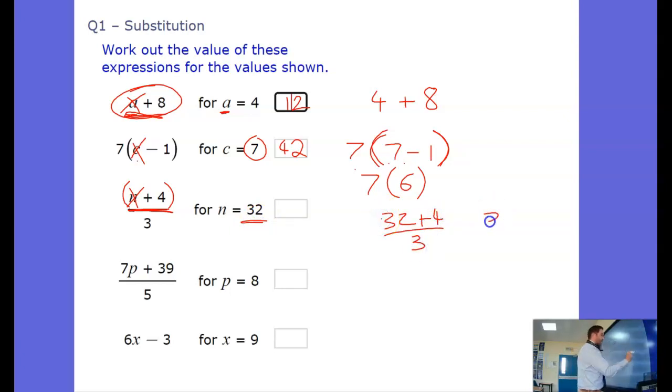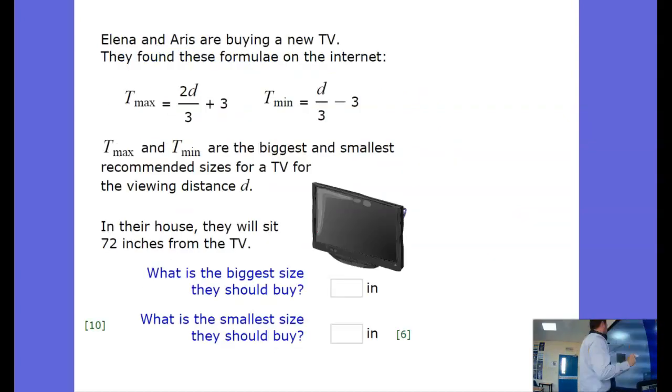Well 32 plus 4 is 36. 36 divided by 3 is 12. And the same thing here and down here. I'm not going to go through every example. But hopefully that makes sense for those ones.